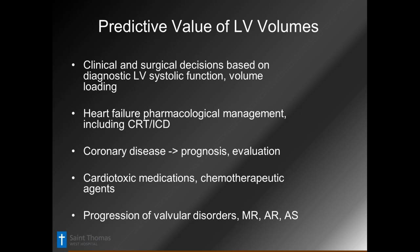We have people who get cardiotoxicity from chemotherapeutic agents. Most people now know we would do a baseline 3D echo with 2D global longitudinal strain and 3D strain, so we have a baseline to ensure that strain value and heart size do not change as the patient receives those therapies. It's also very helpful for the progression of valvular disorders — in particular mitral regurgitation, aortic regurgitation, and aortic stenosis.